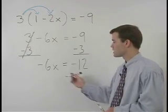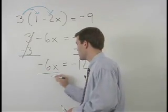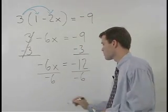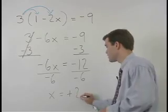To get x by itself, we divide both sides by negative 6 and x equals positive 2.